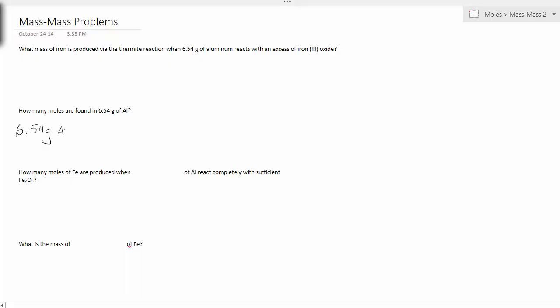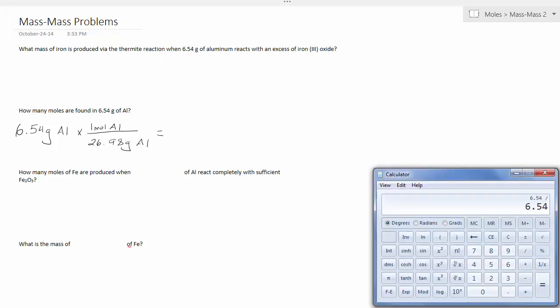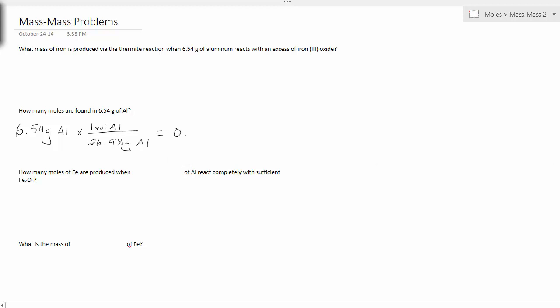So I'm going to say how many moles are found in 6.54 grams of aluminum? Well, this is a pretty straightforward conversion. This is grams of aluminum to moles of aluminum. We've done this before, we did this a little while ago, it should be fairly straightforward, right? 0.242 moles of aluminum.